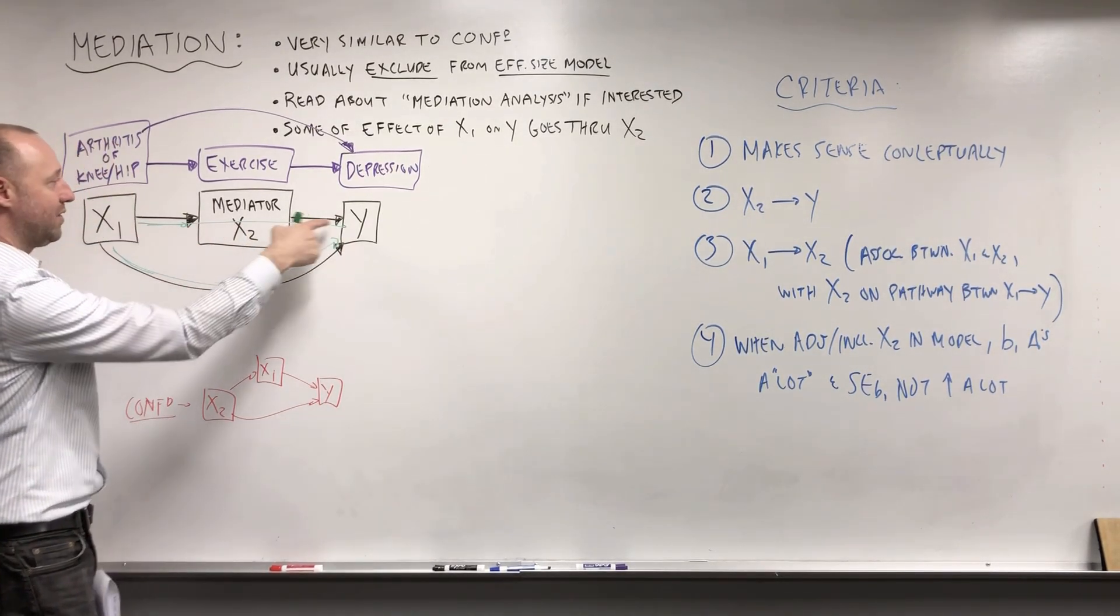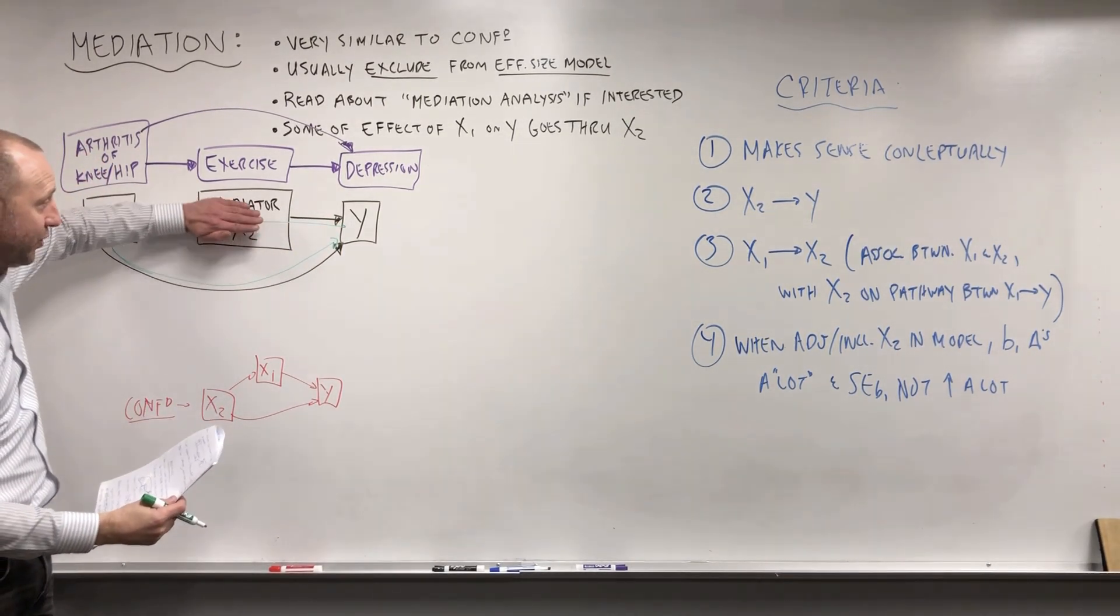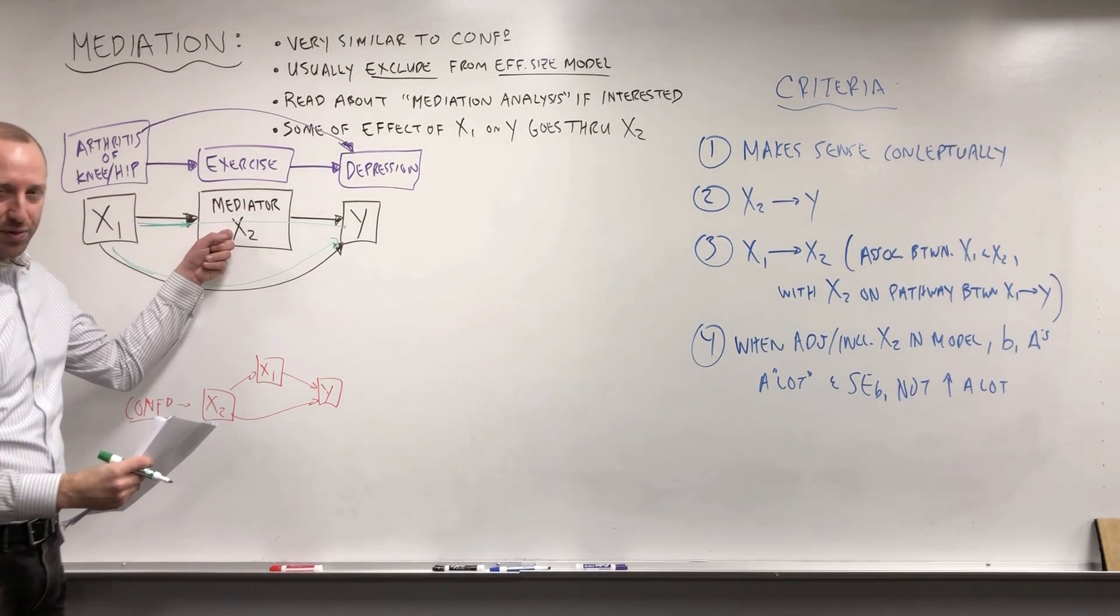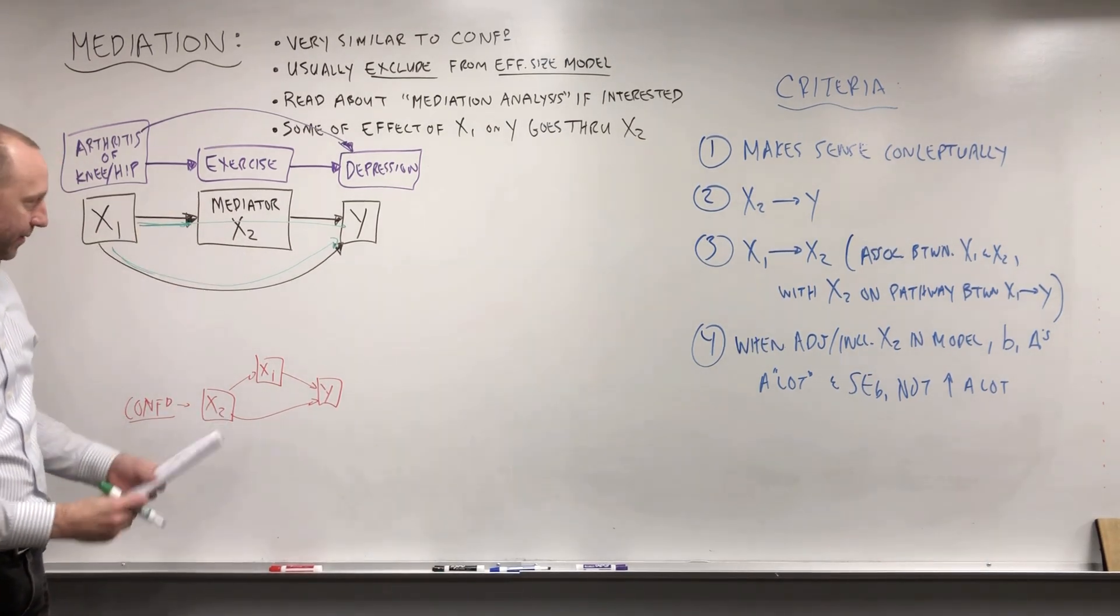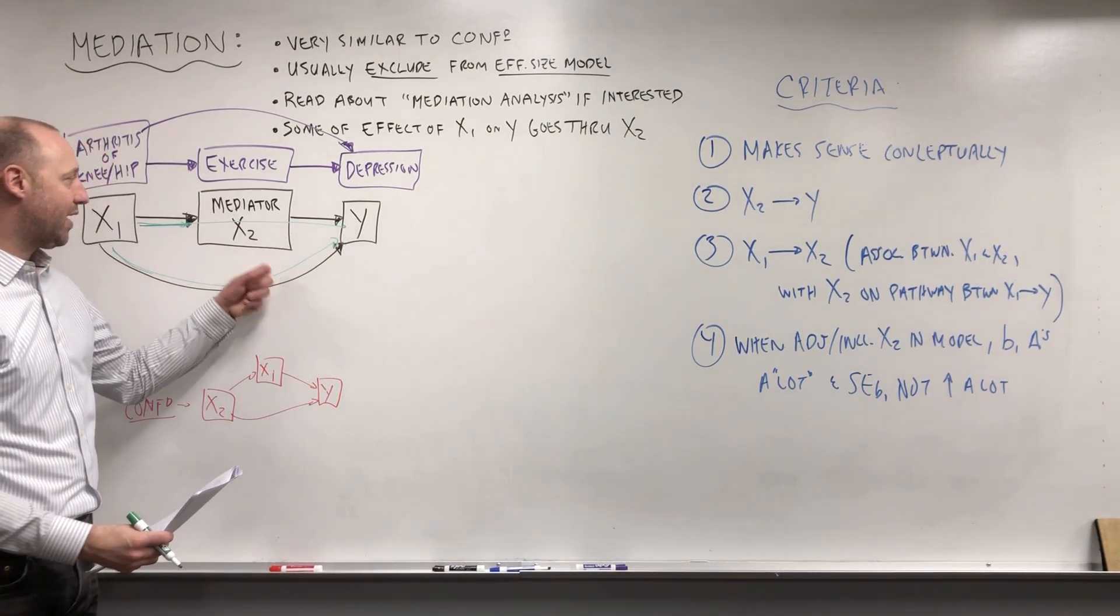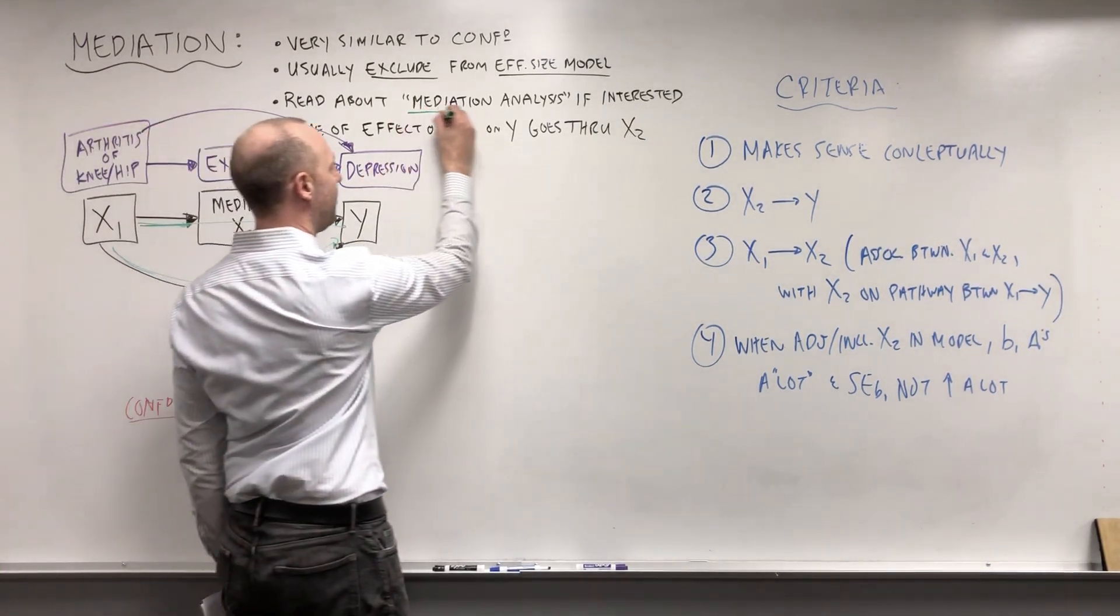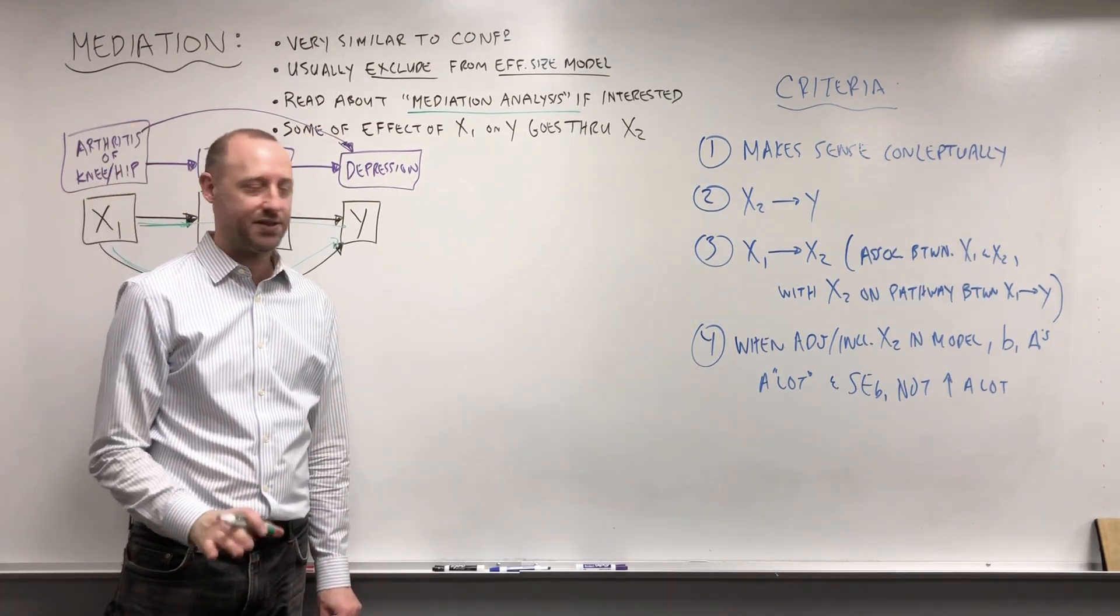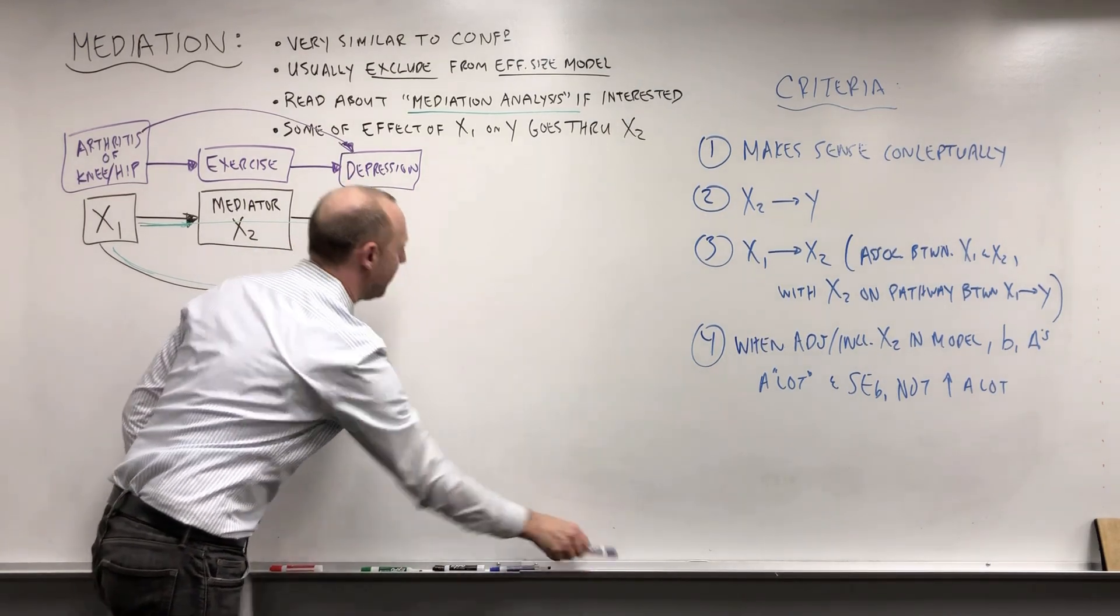This here gives us the indirect effect. The effect of x1 on y that's going through the mediator. Some of that effect, when the mediator is included in the model, this part gets absorbed into the coefficient for the mediator. So some of the effect of x1 gets taken away or put into there. And these two combined make up the total effect. The direct and the indirect effect. So that's something you can read a bit more about on your own if you want. You're not going to be assessed on anything in terms of mediation analysis for the course.